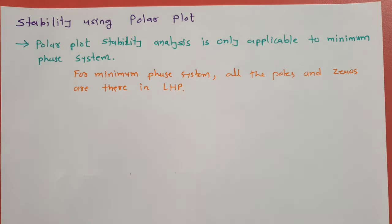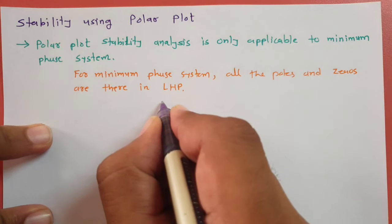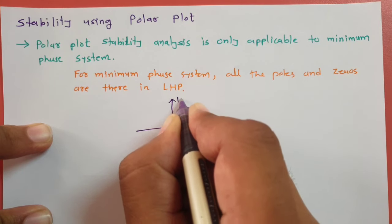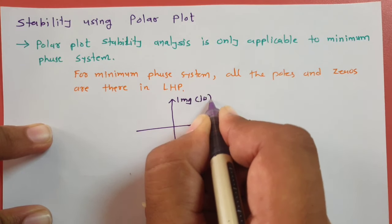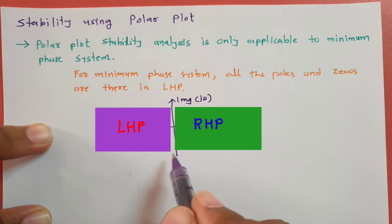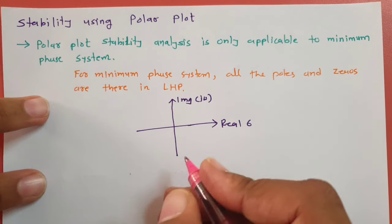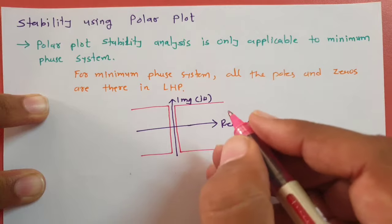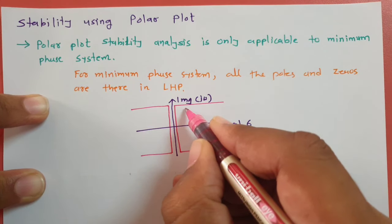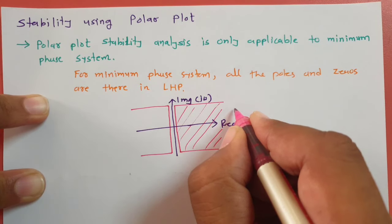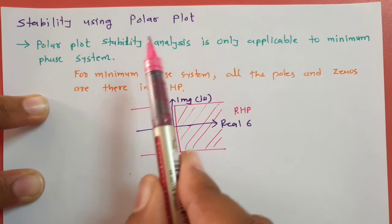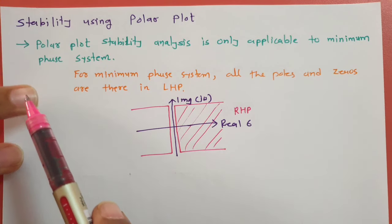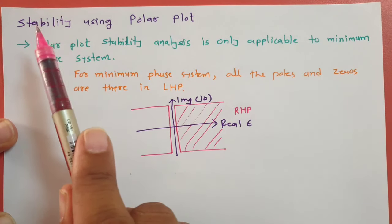For a minimum phase system, all the roots are lying in the left half plane. If we have a real axis and imaginary axis, the right half plane and left half plane are defined accordingly. If any roots are in the left half plane, the system is stable; if any roots are in the right half plane, the system is unstable. In that case, one cannot identify stability by polar plot.